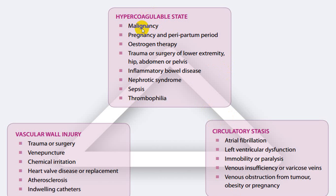Hypercoagulability is very common with malignancy, pregnancy, peripartum period, estrogen therapy or oral contraceptive pills, trauma, surgery — particularly on hip bones, abdomen, or pelvis — IBD, nephrotic syndrome, sepsis, and thrombophilia. Stasis commonly produces thrombus in the atrial chamber due to atrial fibrillation, big dilatation of RA or LA, left ventricular dysfunction, immobility, paraplegia, severe hemiplegia, venous insufficiency, varicose vein, and venous obstruction from tumor, obesity, or pregnancy.